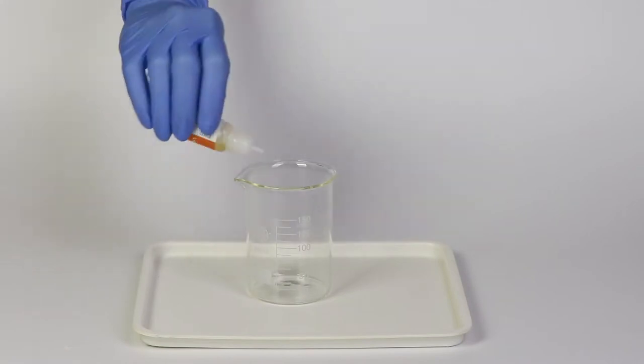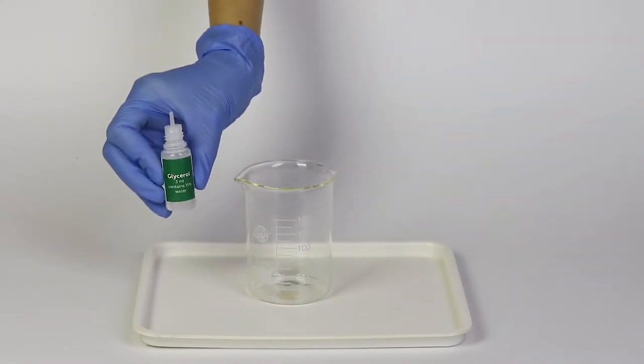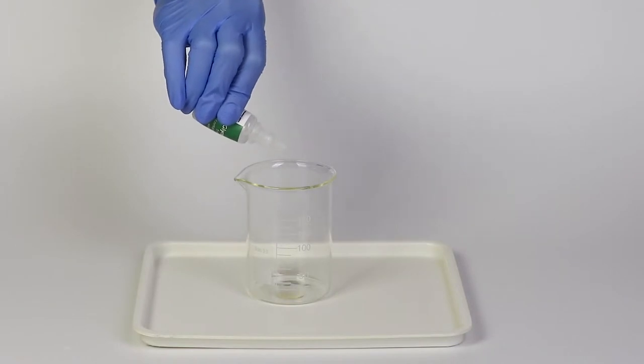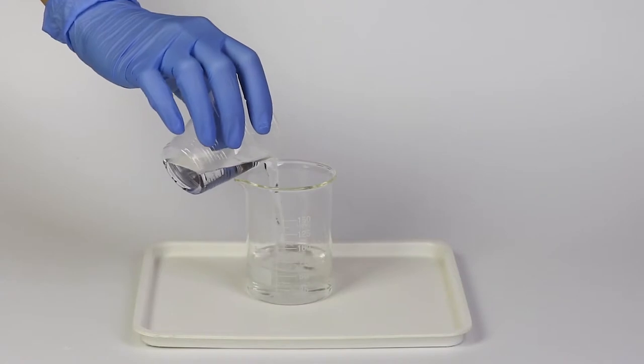Measure 10 to 20 drops of liquid soap into the beaker. Then add 10 drops of glycerol to obtain a soapy mixture. Now add 75 milliliters of water.